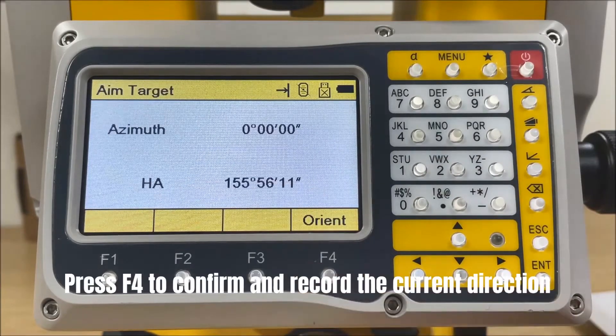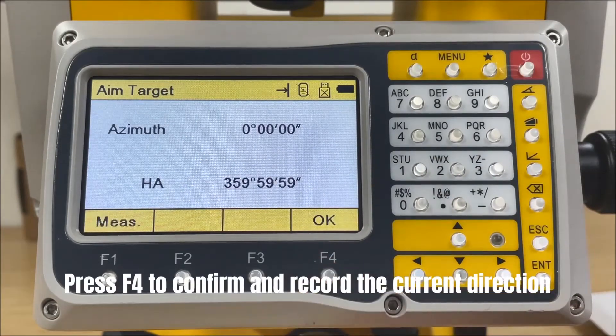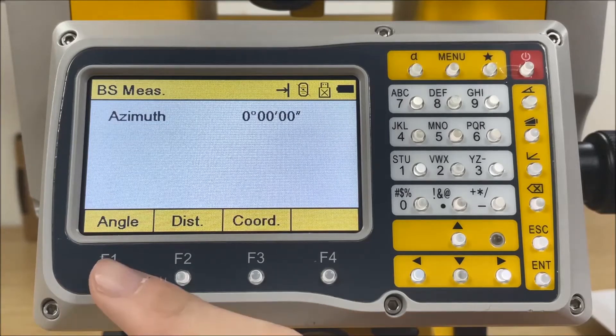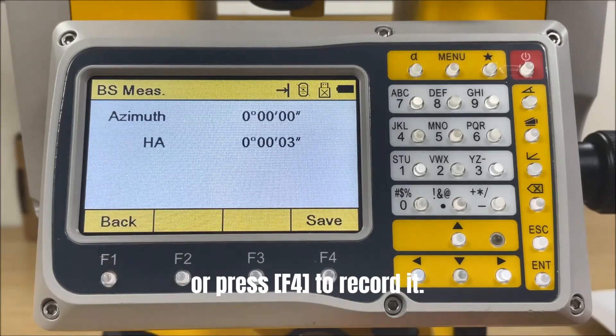Press F4 to confirm and record the current direction as back site. Press F1 for measurement. Press F4 to record it.